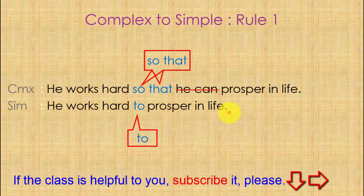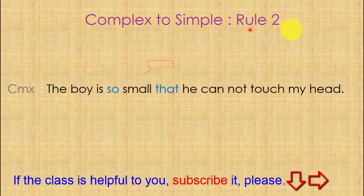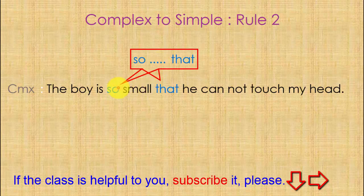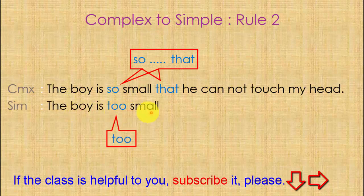Complex to simple, Rule 2. The sentence is: 'The boy is so small that he cannot touch my head.' The conjunction here is 'so...that.' In this position you can see an adjective — sometimes an adverb. This is a complex sentence. The subordinate clause is 'that he cannot touch my head' and the main clause is 'the boy is so small that.' Instead of 'so,' write 'too.'